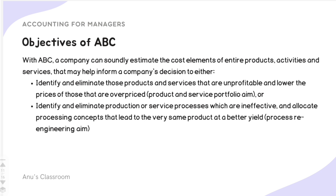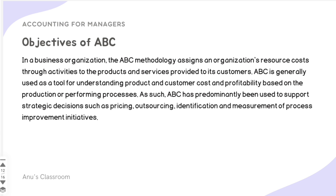For example, if Method A uses more resources but Method B uses less for the same output, ABC costing helps determine which process is more efficient, so we choose the one with lesser input. In an organization, ABC assigns resource costs through activities to the products and services provided to customers. It is generally used to support strategic decisions such as pricing, outsourcing, and identification and measurement of process improvement initiatives.